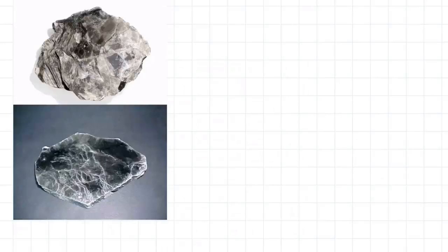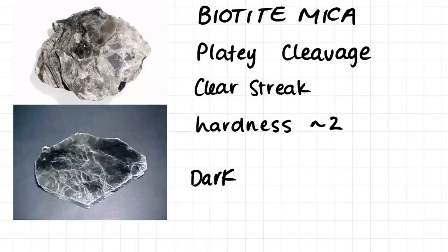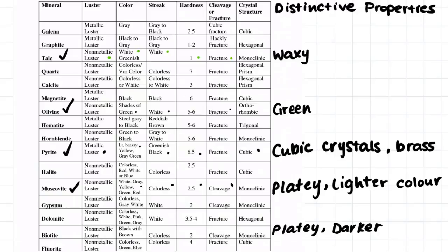This mineral here is quite similar to the muscovite mica. It has a platy cleavage, a clear streak, and a hardness of around 2. However, we observe the mineral is dark in color. The mineral is a biotite mica. For the biotite mica, it was dark in color, had a colorless streak, a hardness of around 2, and a platy cleavage. The two distinctive properties of the biotite mica are the platy cleavage and the darker color compared to the muscovite.